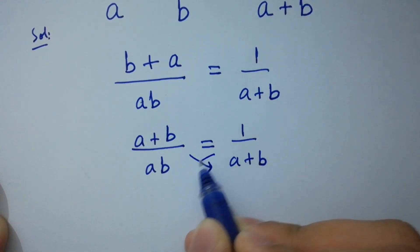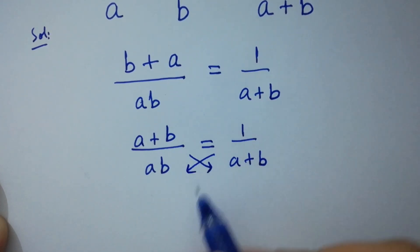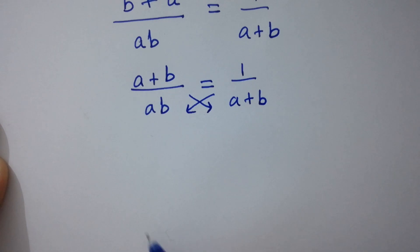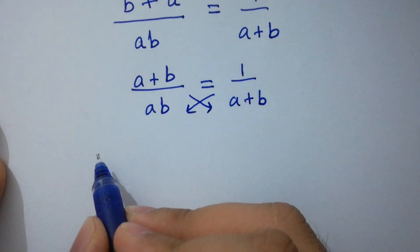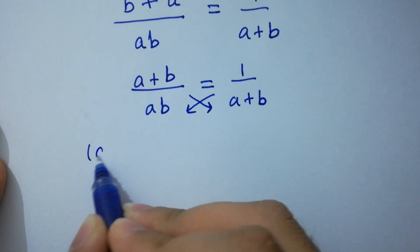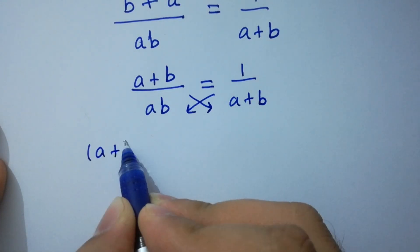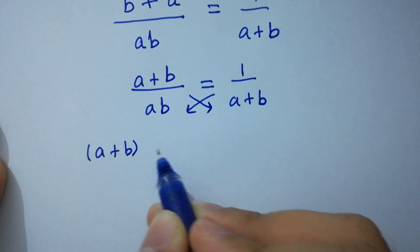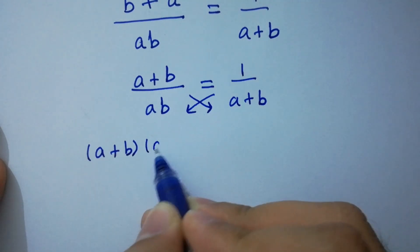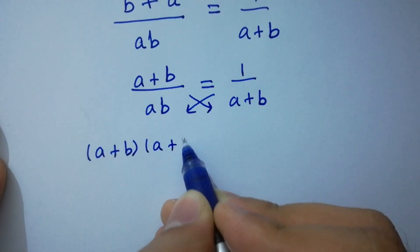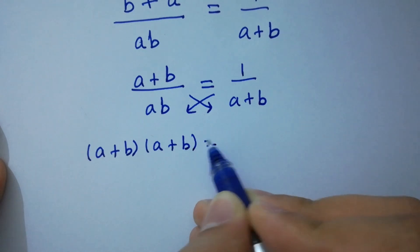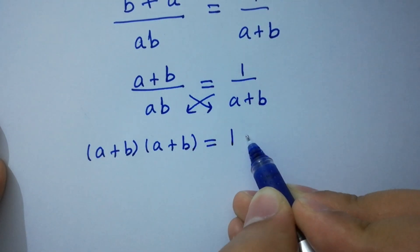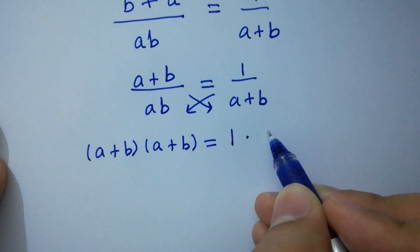By cross multiplication, we have a plus b times a plus b equal to 1 times ab.